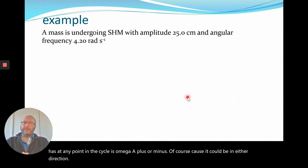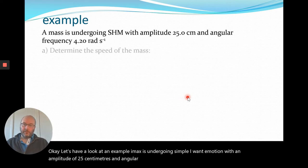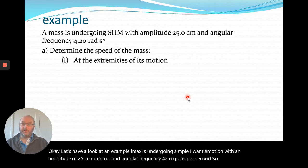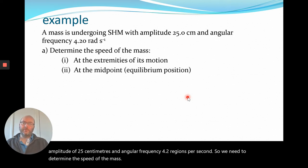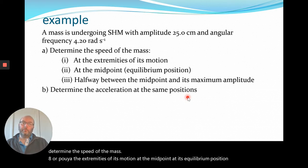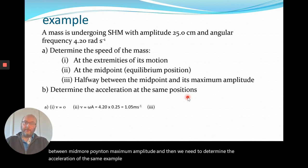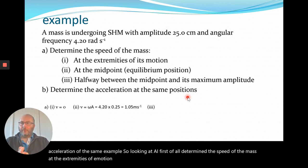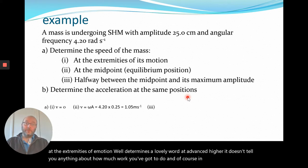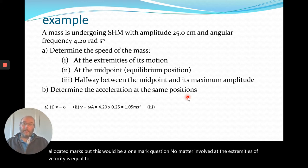Let's look at an example. A mass is undergoing simple harmonic motion with an amplitude of 25 centimetres and angular frequency 4.2 radians per second. We need to determine the speed of the mass: part (i) at the extremities of its motion, at the midpoint, at the equilibrium position, and halfway between midpoint and maximum amplitude; then determine the acceleration at the same positions. At the extremities, the velocity is equal to zero.